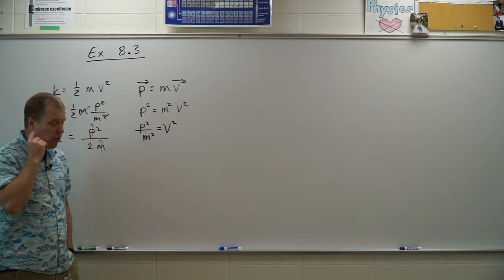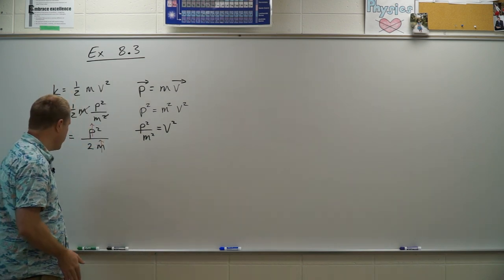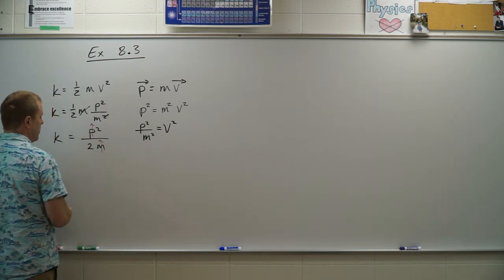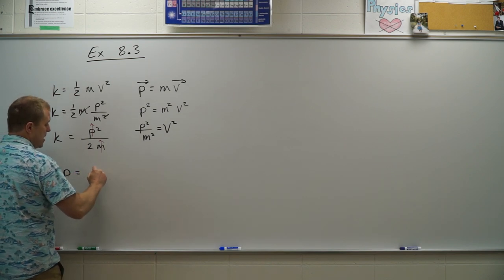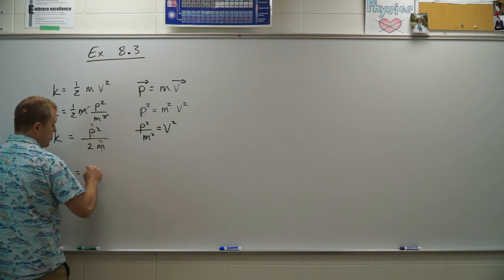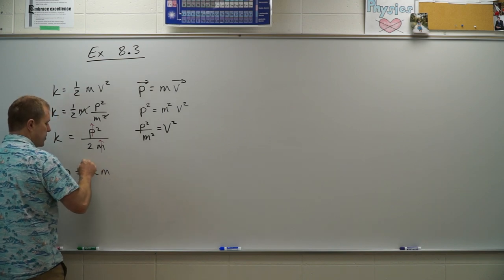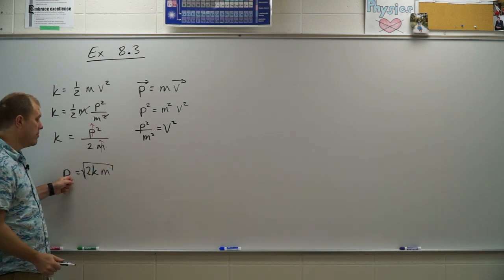So now they want me to find what is the ratio of their momentums. In order to find that, I need to first solve this for momentum. So momentum is going to be k times 2 times m, all square rooted. This will give me the momentum.